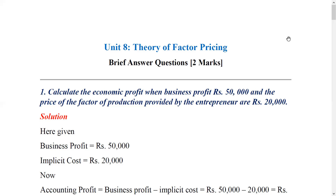Now, business profit is 50,000. In total revenue, this is usually the accounting profit. We have to put 50,000, and if the entrepreneur has different factors of production and uses the same factors, that is an additional implicit cost of 20,000. So the price of those owner-supplied factors — the implicit cost — is 20,000.